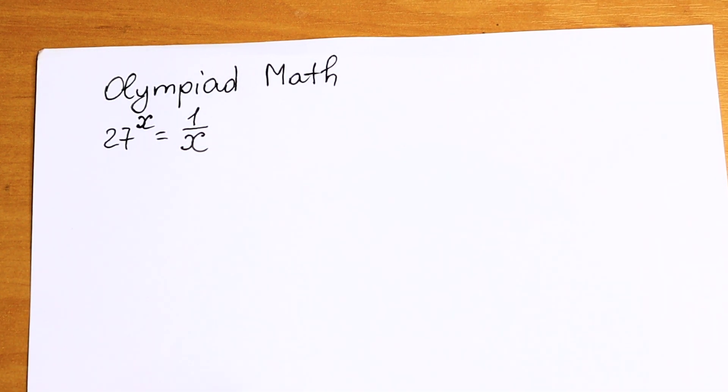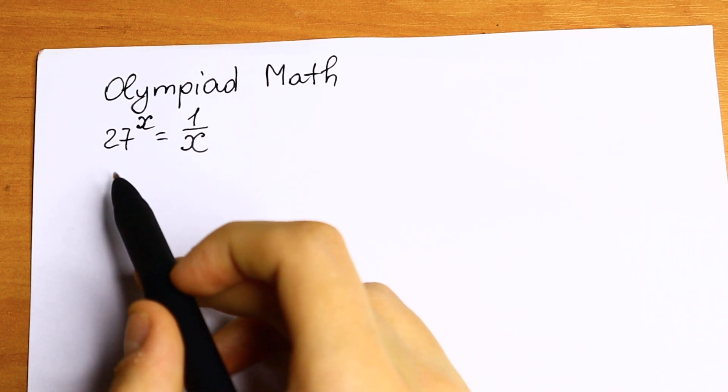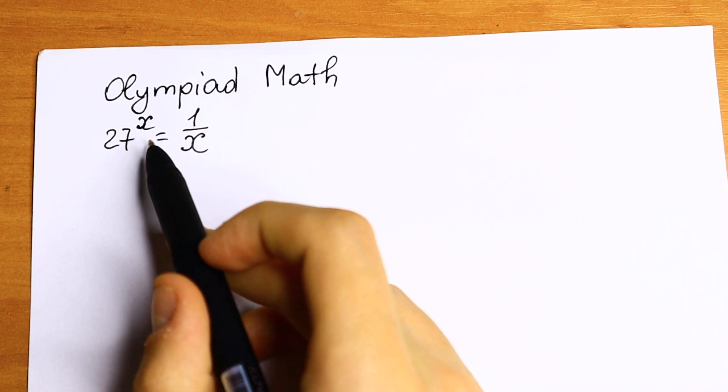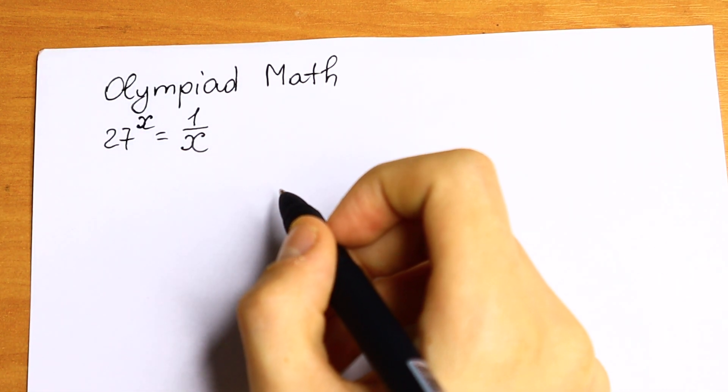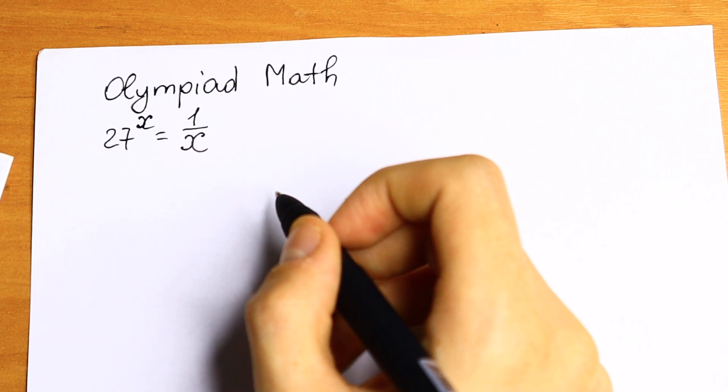Hello everyone, welcome back to iAMathematics. Today I want to show you how to solve this interesting equation. We have 27 to the power x equal to 1 over x. I want to show you a real good method how you can solve this interesting equation.